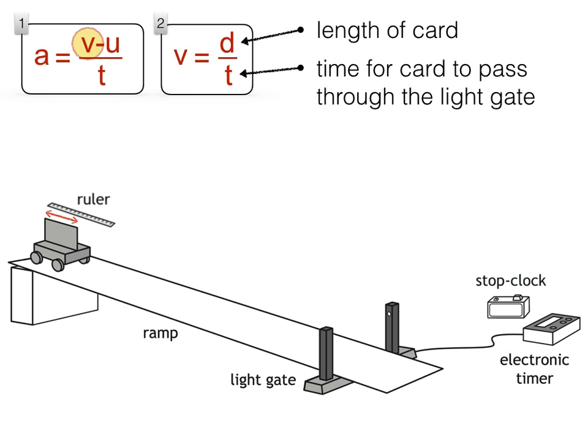U in the first equation is the initial velocity of the trolley. The question states that the trolley is released from rest, so this means that U is equal to 0 meters per second. The pupil doesn't have to measure this then.